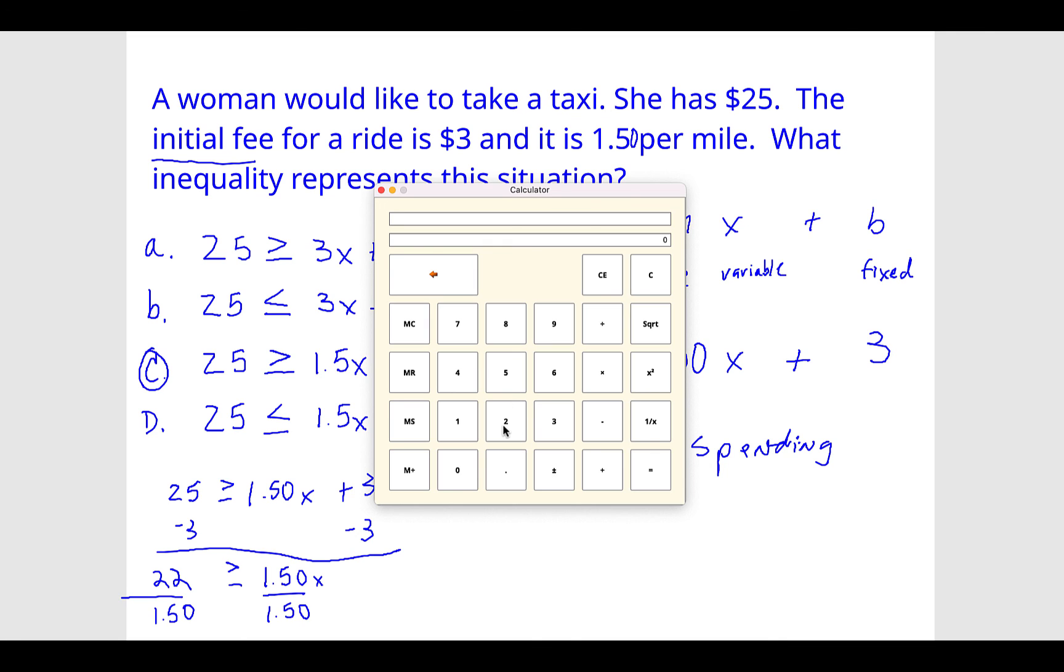Okay, so here's the calculator. Let's do $22 divided by $1.50. Don't need the zero, but let's put it in anyway. So she could go 14.6 miles, okay, and that would be the answer.